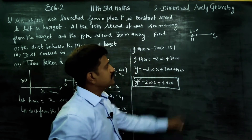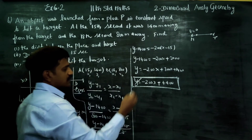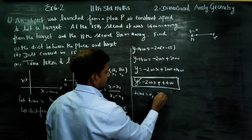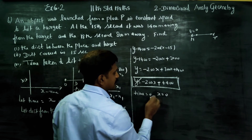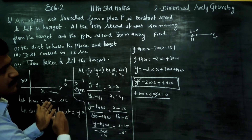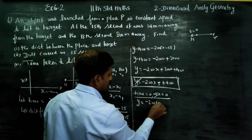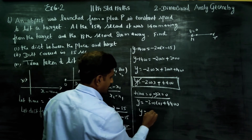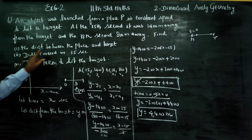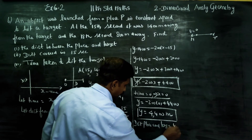When time is equal to zero, x equals zero. This gives the actual distance between the launching pad and the target. Substituting x equals zero: y equals negative 200 into zero plus 4400, so y equals 4400 meters. Therefore, the distance between the place and the target is 4400 meters.